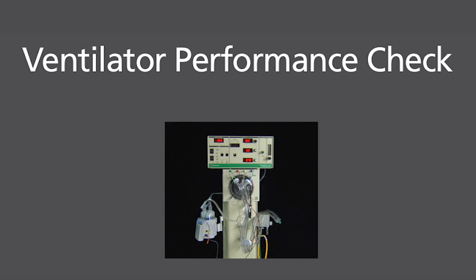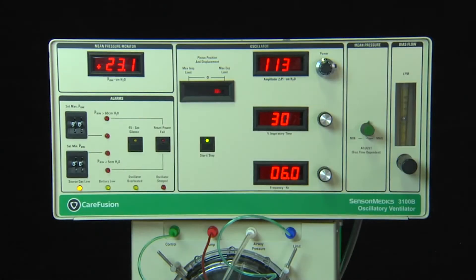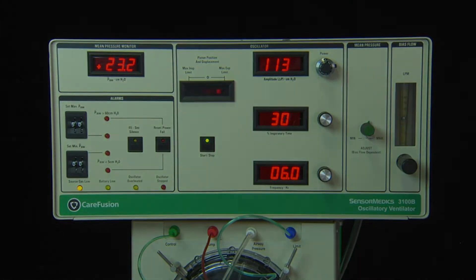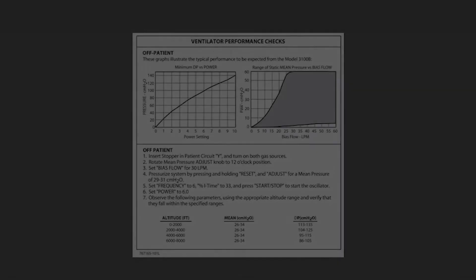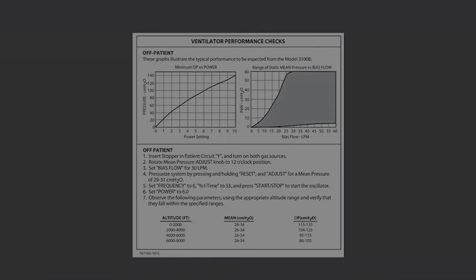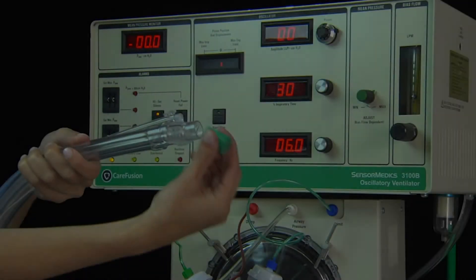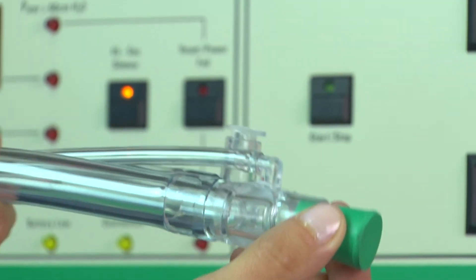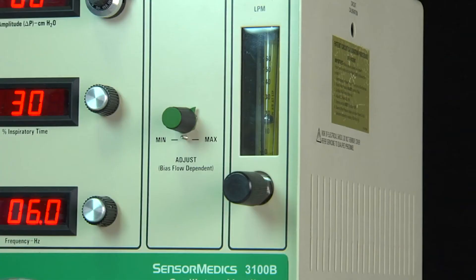Ventilator Performance Check: To carry out the ventilator performance check, follow the instructions on the label located on the top of the ventilator. Insert the stopper into the circuit at the patient Y.